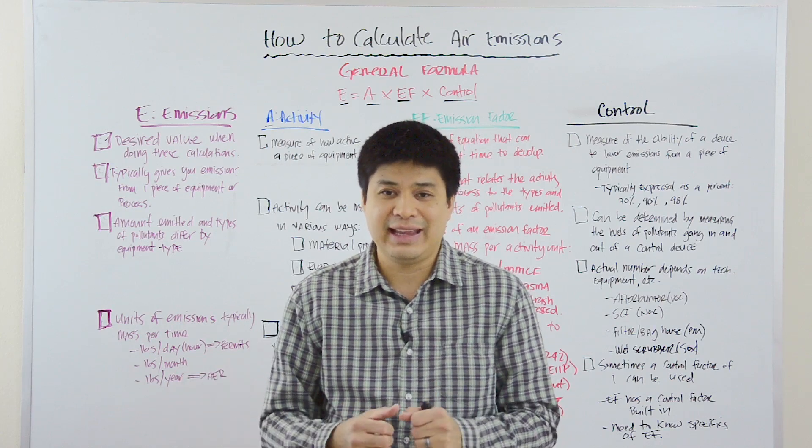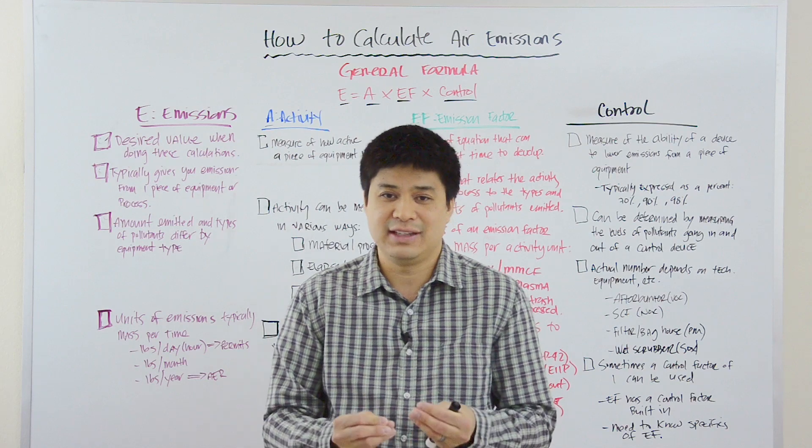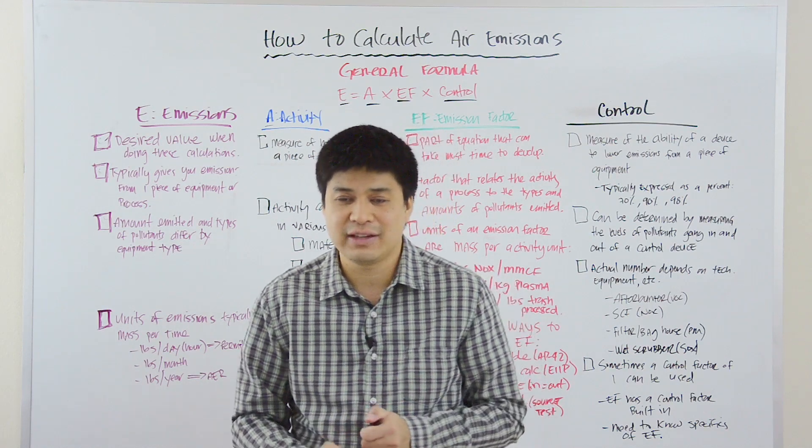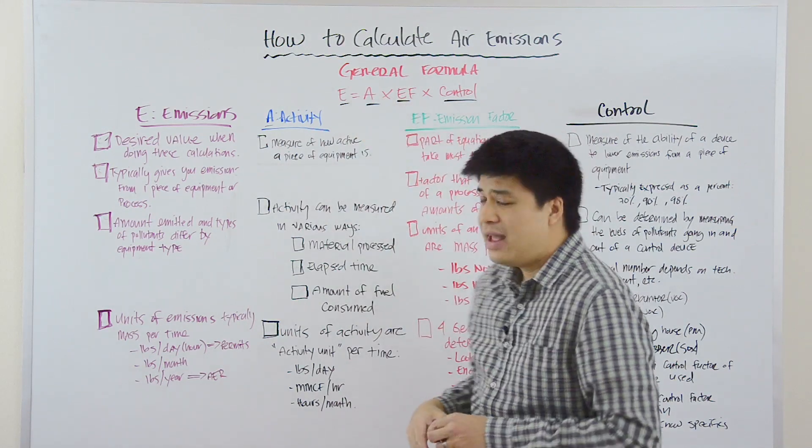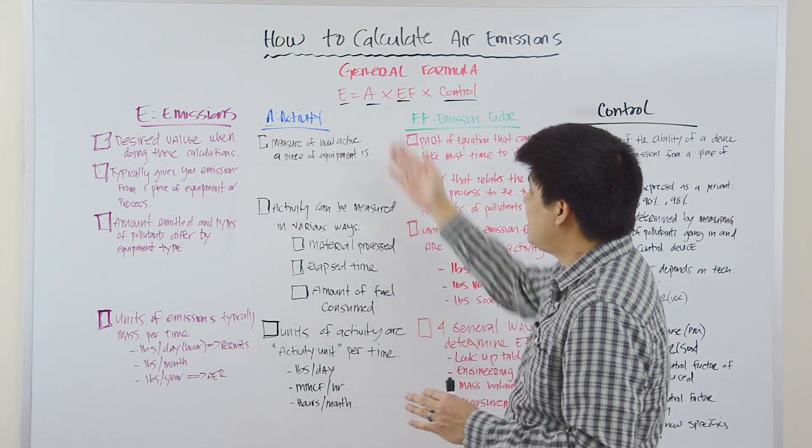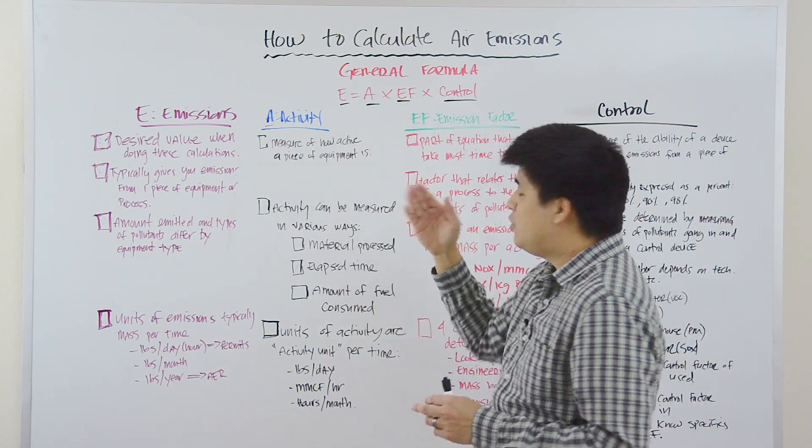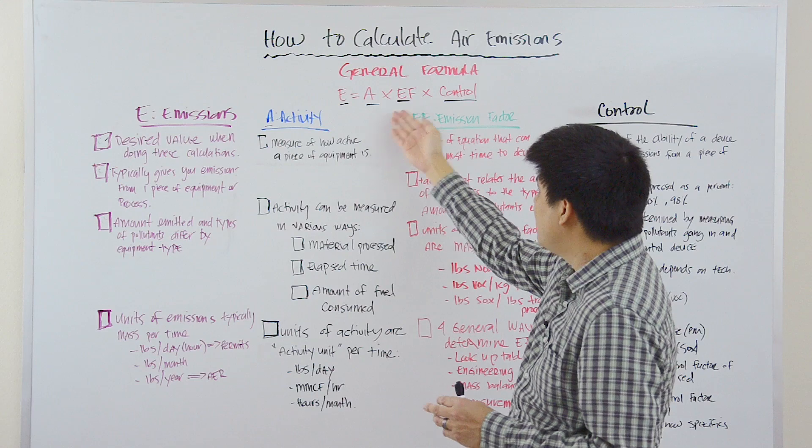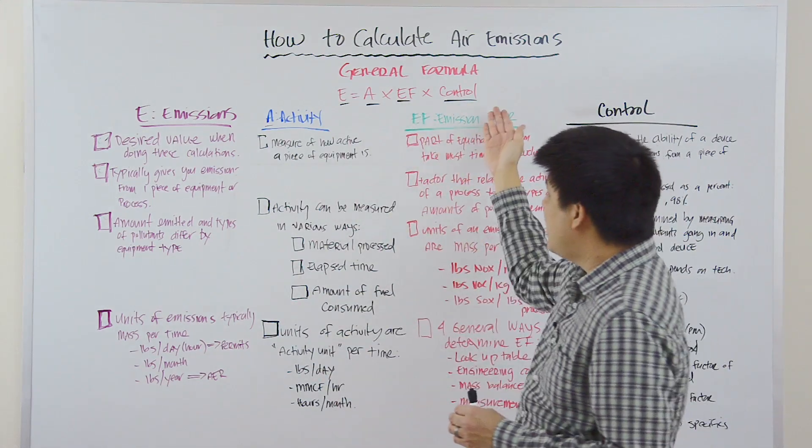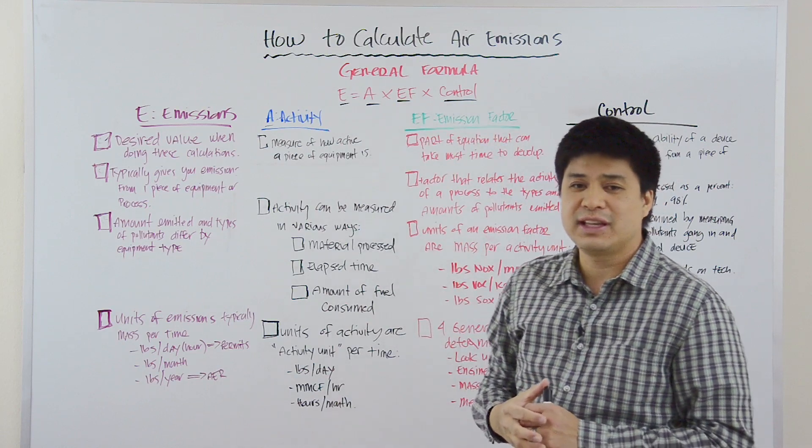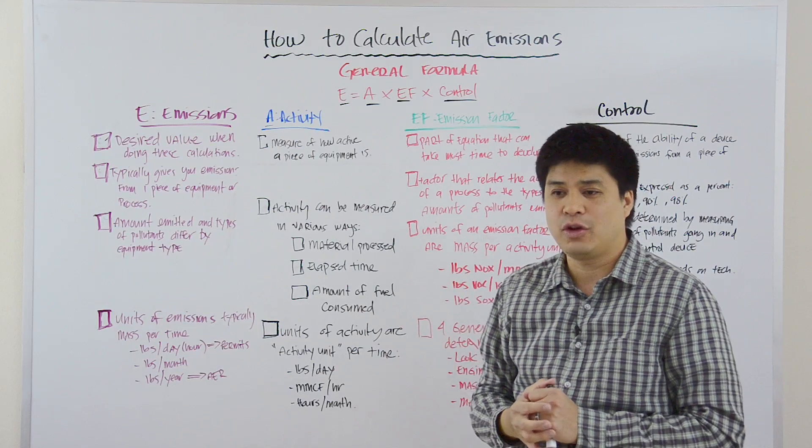Most times, calculating air emissions can be boiled down to a simple equation, and we call it the general equation for calculating air emissions. And it's provided here in red. This general equation simply tells us that the air emissions from any piece of equipment is equal to the activity rate times the emission factor times the control efficiency. And if we have all three of those components, then we can calculate our emission rate for a single piece of equipment.